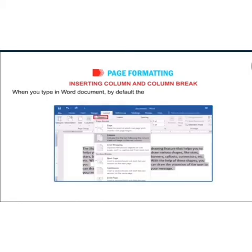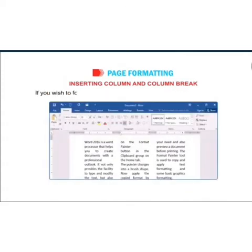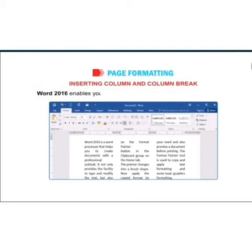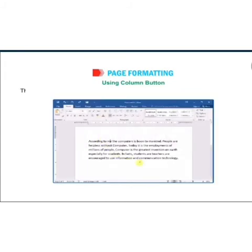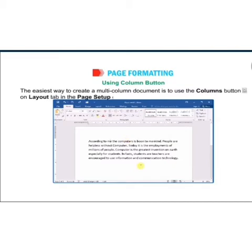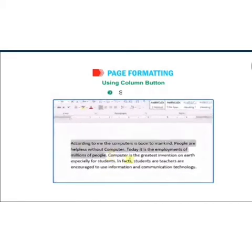Next is inserting columns and column breaks. When you type in a Word document, by default the text is displayed in a single column style. If you want to format the document in newspaper style, that is column style, Word 2016 enables you to do it. You can convert it using two methods, one of which is using a column break.